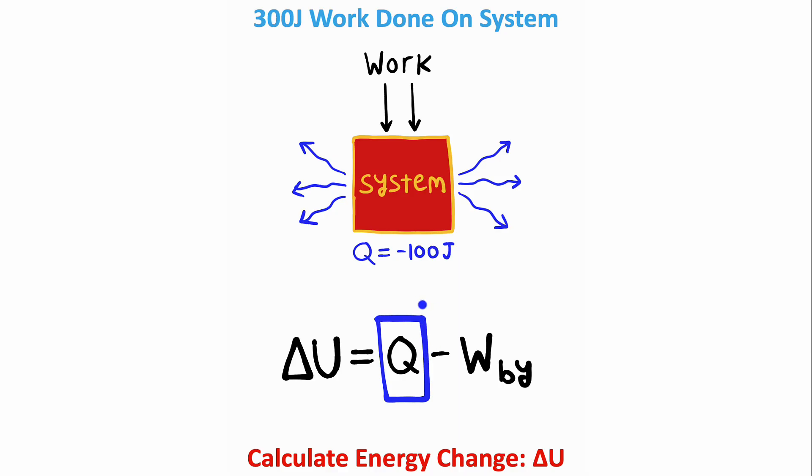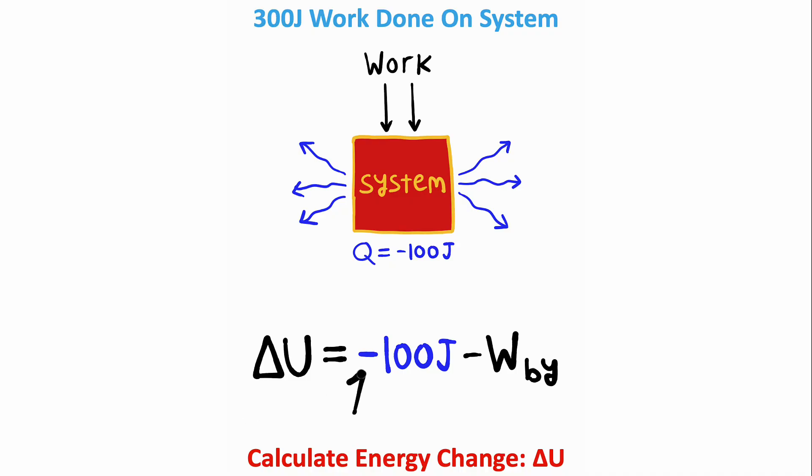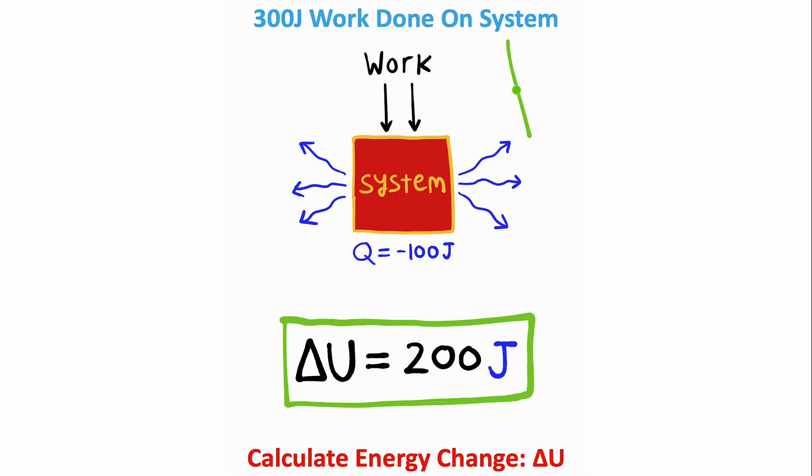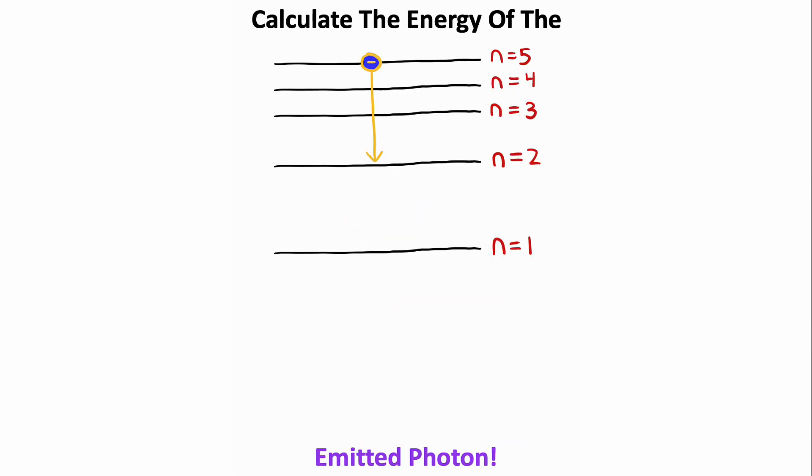Q represents the heat absorbed by the system, and notice in this situation, Q is equal to negative 100 joules. The reason we have a negative value is because heat is being released rather than absorbed. W represents the work done by the system. But notice in this problem, we have 300 joules of work done on the system. So the work done by the system is going to be negative 300 joules. The two negatives here will cancel to give you a positive, and negative 100 plus 300 comes out to 200 joules.